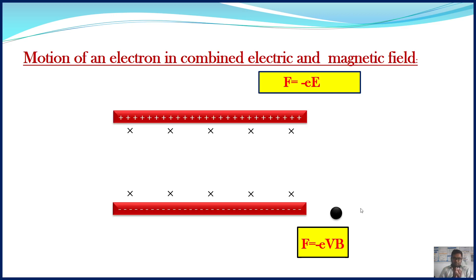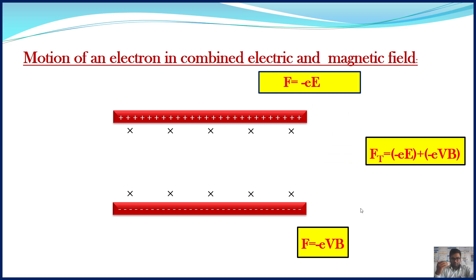Now, consider the region where both electric and magnetic fields are present. When an electron is moving through this region, both fields exert forces on the electron. So, the total force acting on an electron is given as F equals minus eE plus (minus eVB). Basically, the total force acting on an electron is the vector sum of the electric force and the magnetic force. This force is also called the Lorentz force.